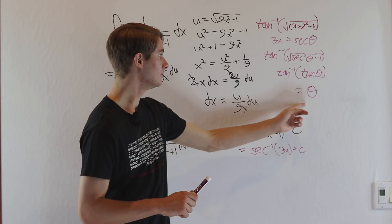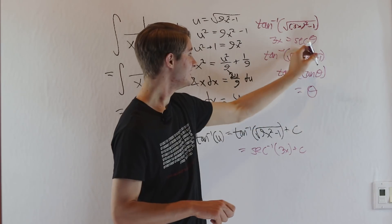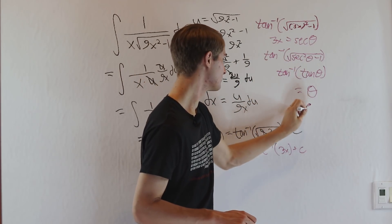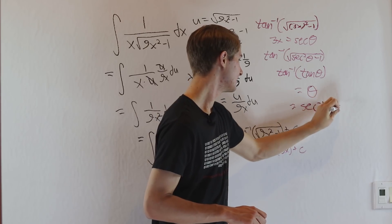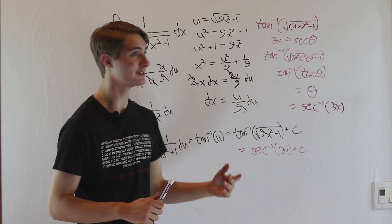And now all we have to do is go back to our substitution, figure out what is theta exactly. Well, in this case, secant theta equals 3x. So theta equals the inverse secant of 3x. So in fact, both of these answers are exactly equal.